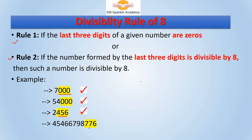Here 776 — we only need to check the last 3 digits. Since 776 is divisible by 8, the whole number is divisible by 8. For the next number, the last 3 digits are 565, and 565 is not divisible by 8, so this number is clearly not divisible by 8.